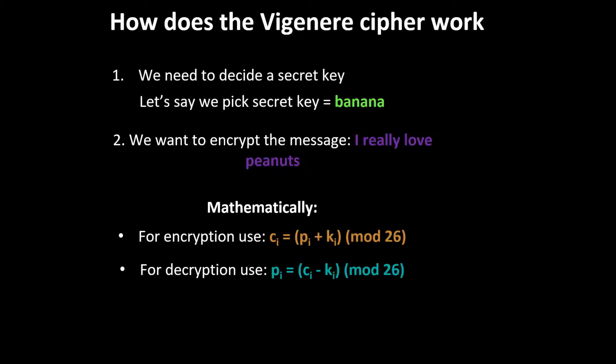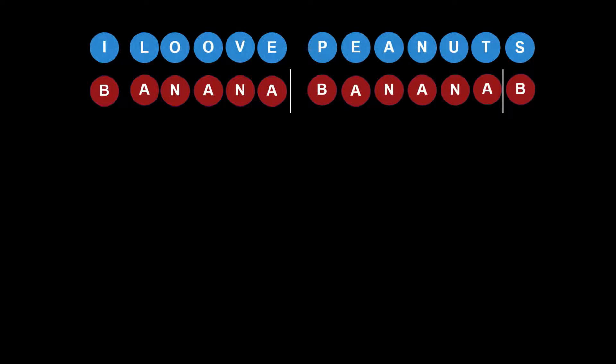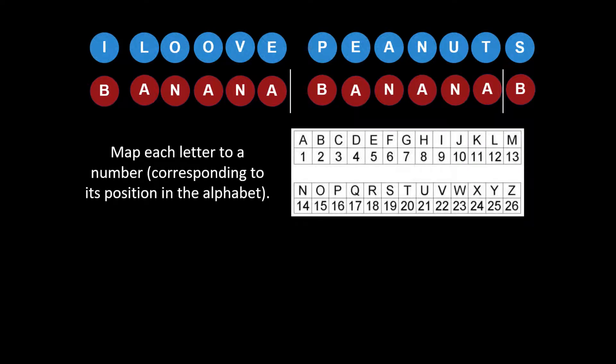One question is: what if our message is longer than our secret key? Let's do an example. I changed the message slightly to "I love peanuts" so it fits the screen. Our secret key is "banana." What we do is write banana matching one letter of our message at a time, and when it ends we start over — restarting banana as far as possible until our message ends.